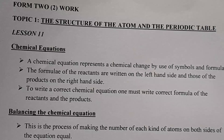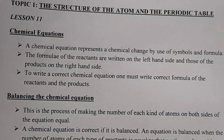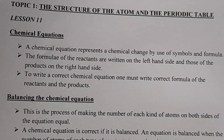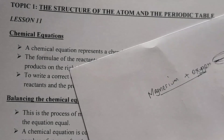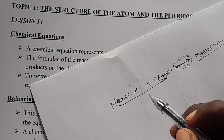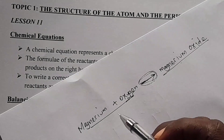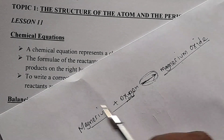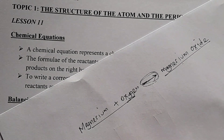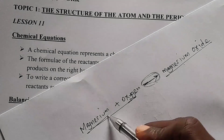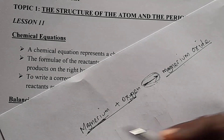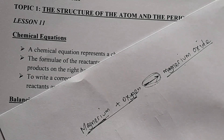To write a correct chemical equation, one must write the correct formula of the reactants and also the products. For example, for this question, you have to know first of all the correct symbol or formula of the reactants and also the product.